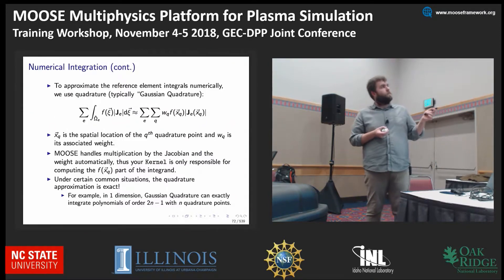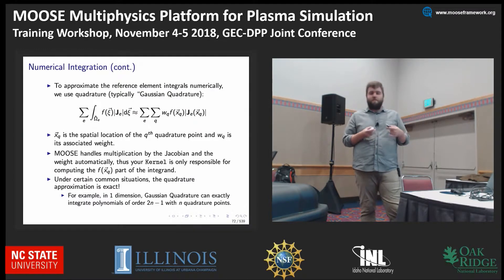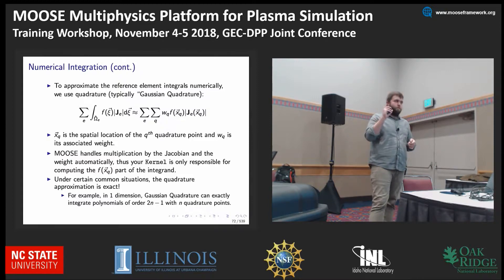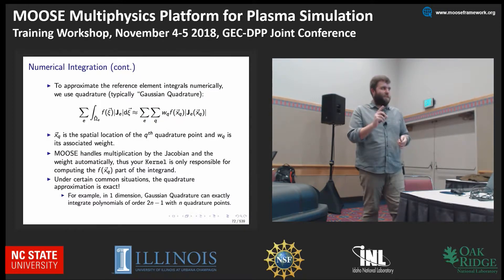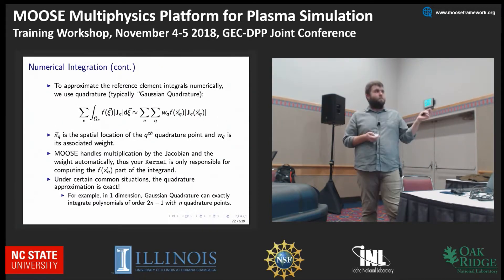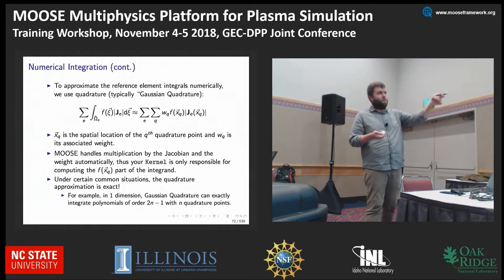Under certain situations, this is exact. In one dimension, Gaussian quadrature can exactly integrate polynomials of order 2n minus 1 with n quadrature points. This might be important based on what you want your numerical integration to be.